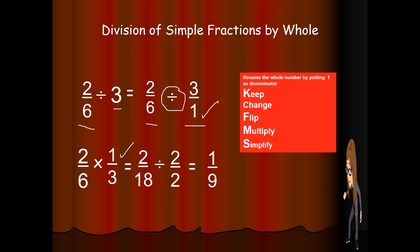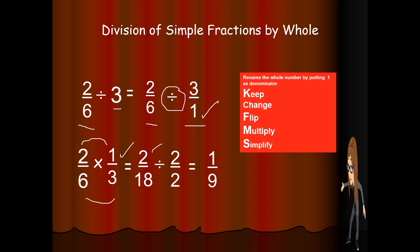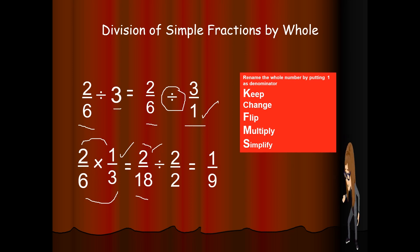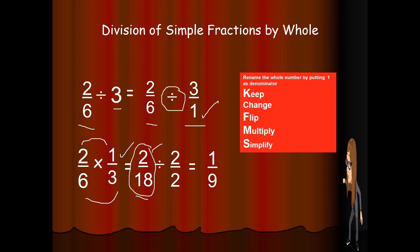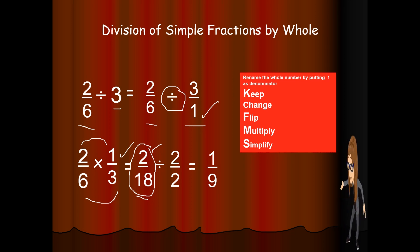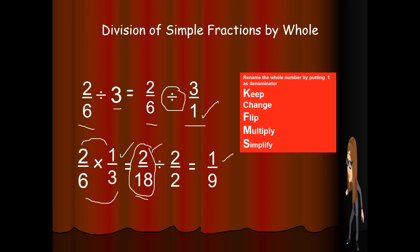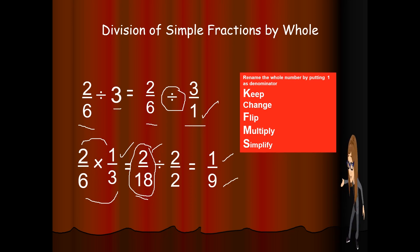Then we multiply. We need to flip 3 over 1, or get the reciprocal of 3 over 1, and that is 1 over 3. Then we multiply: 2 times 1 is 2, and 6 times 3 is 18. Now let us simplify 2 over 18. The common factor is 2, so divide by 2: 2 divided by 2 is 1, and 18 divided by 2 is 9. So the answer is 1 over 9.